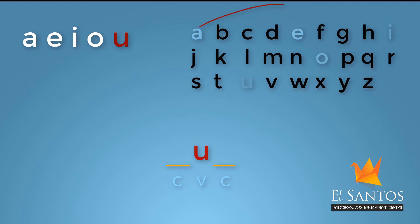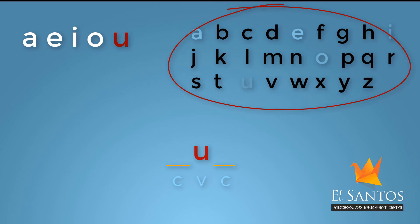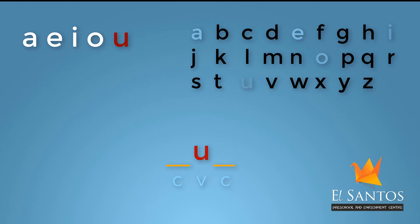Let's pick our consonant sounds from the consonant list. We will pick two consonants to make our word. I am going to pick C, which has the sound K, for my first sound. Now I have the sounds K and U. I can complete this word using the consonant T, which has the sound T. It reads as K, U, T — Cut.